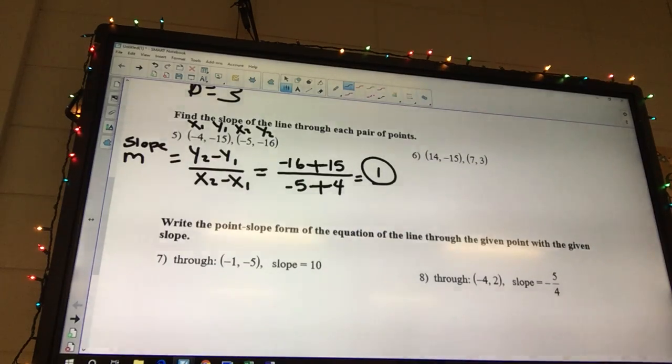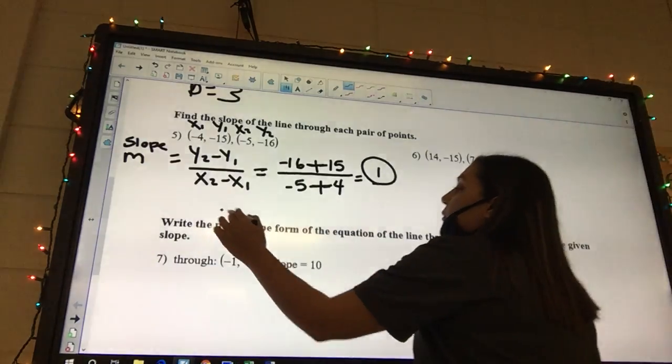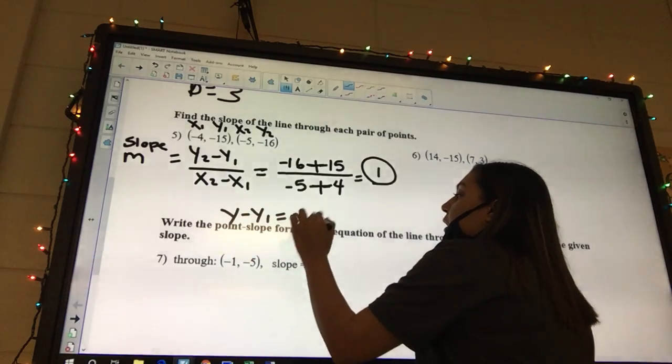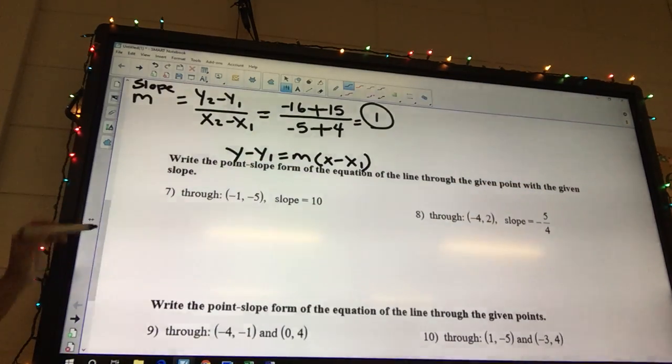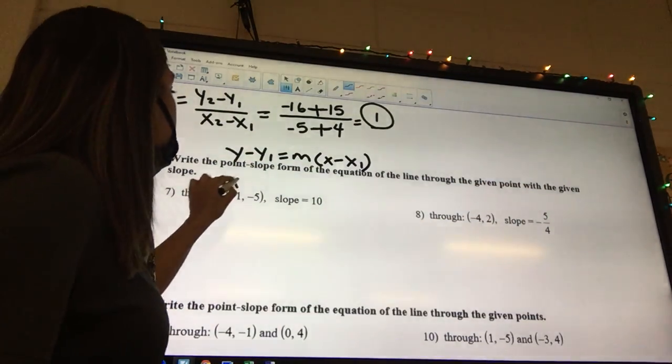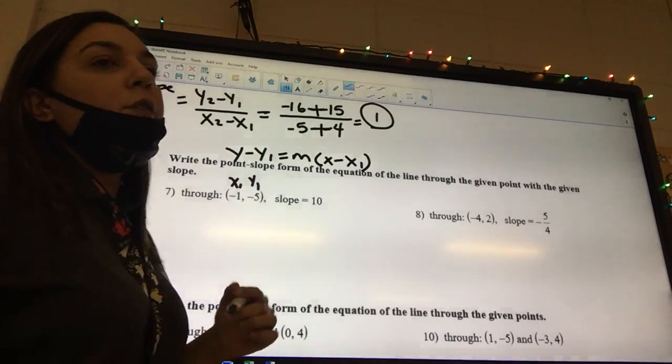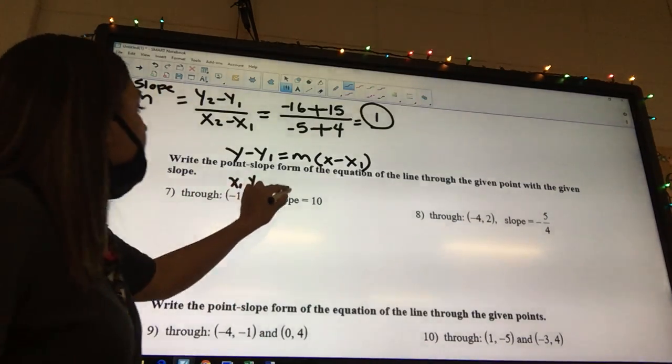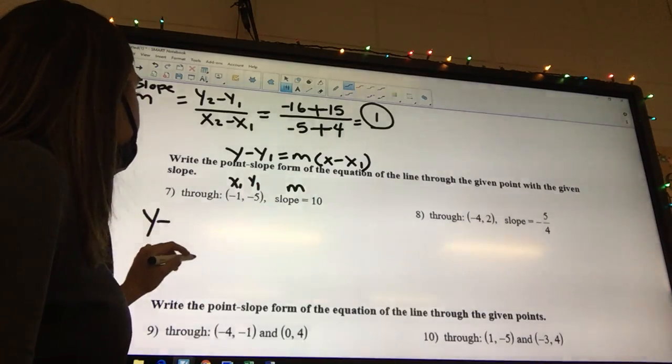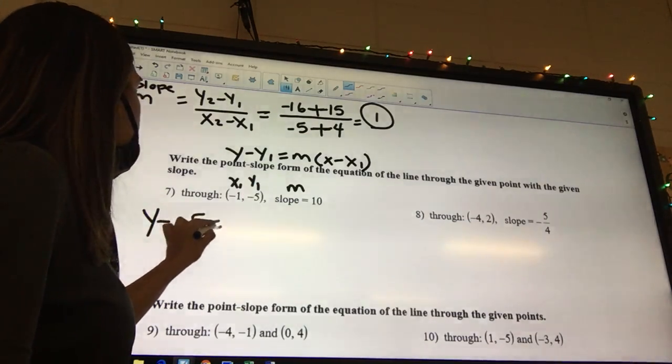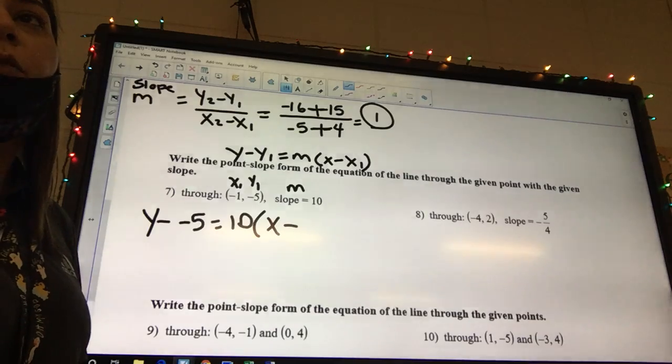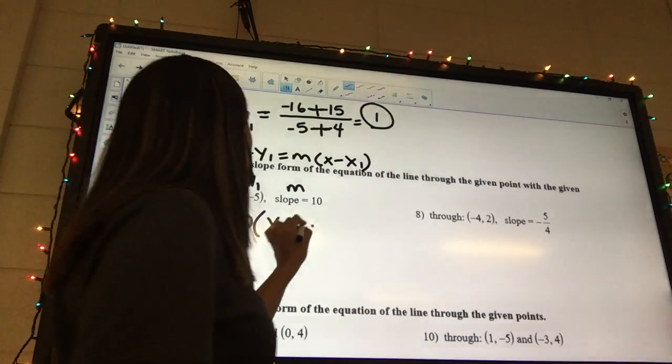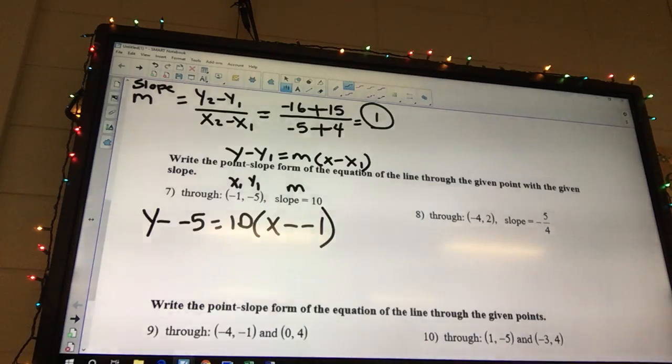It says write the point-slope form. Our point-slope formula is y minus y1 equals m times x minus x1. That means I need to leave my answer with parentheses in it. So we can label these x1, y1. What letter do we use for slope? M. M. So I got y minus. My y1 is negative 5. My m is 10. x minus x minus my x1 is what? Negative 1. It's going to be negative 1. What's a minus minus? Plus. Yeah. It's going to be a plus.